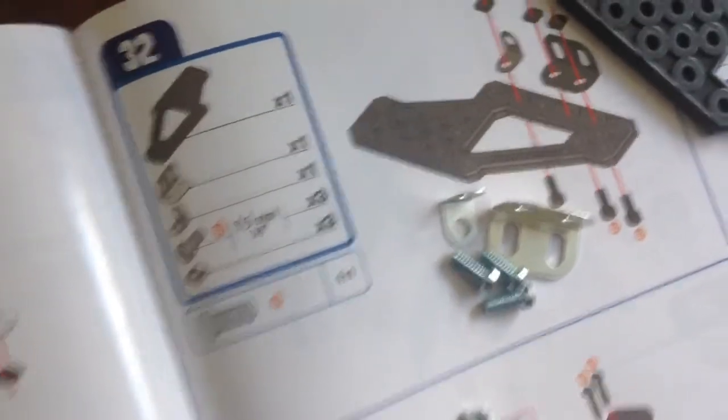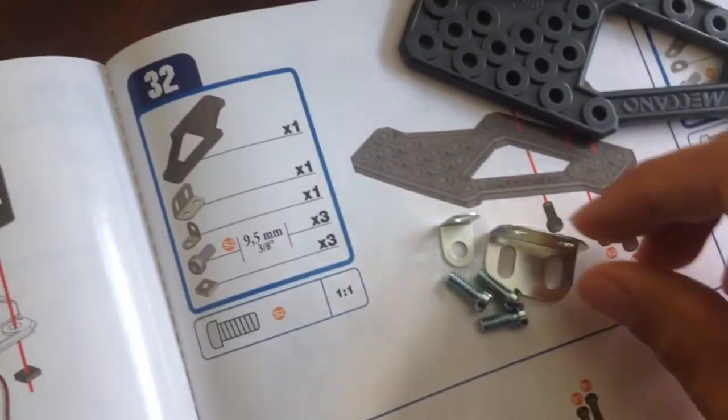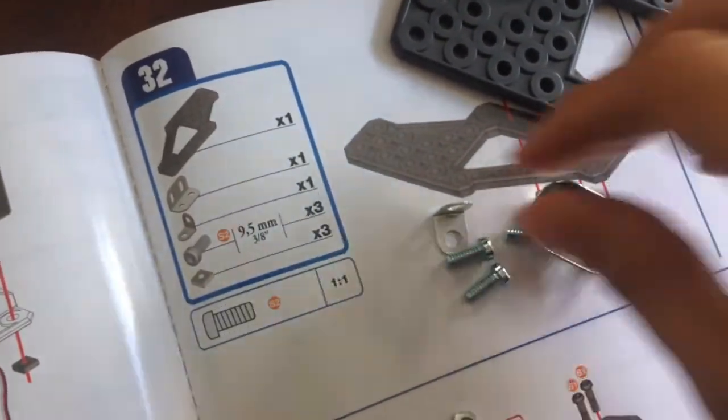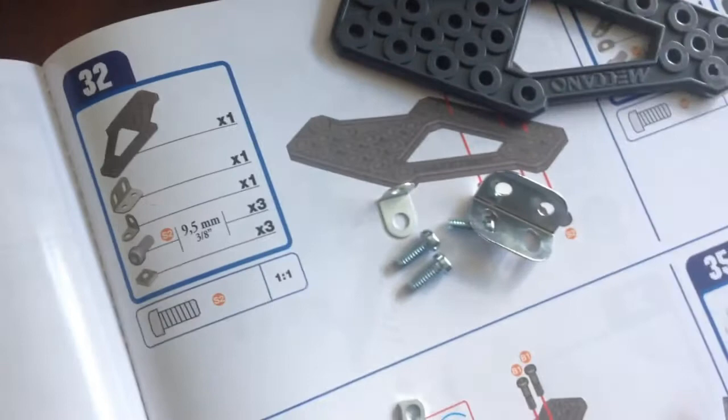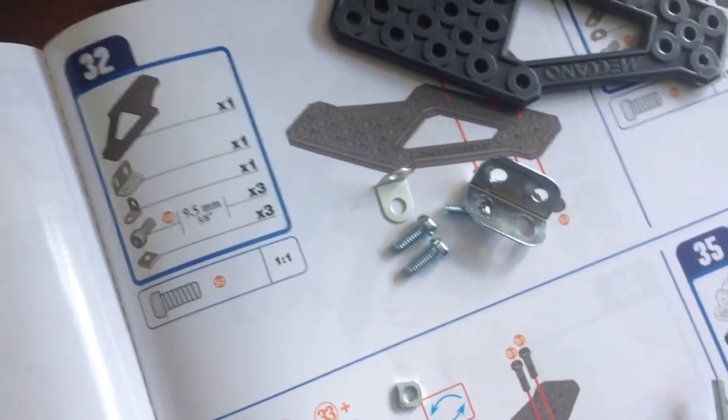We have this large piece here, and we need this funny looking piece here, and this funny looking piece here, as well as three nuts and three 9.5mm screws.